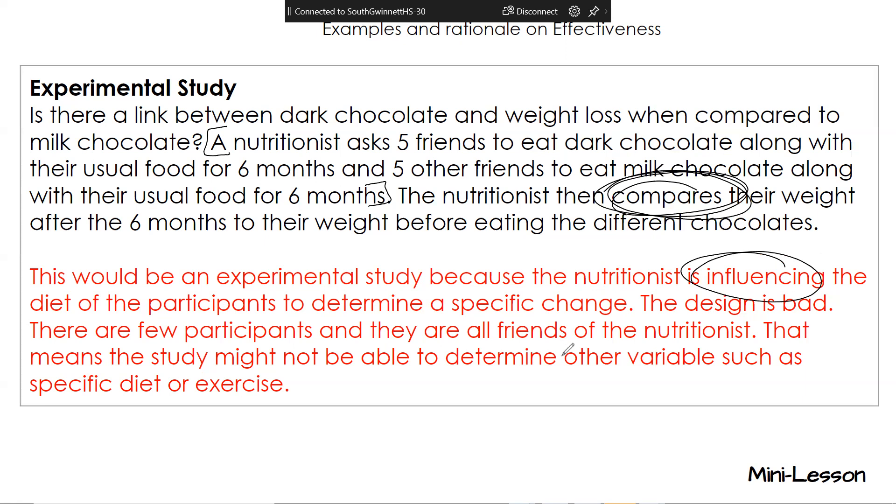Design is bad though because there are very few participants, but they're all friends. So that's an issue as well. Like do your friends eat just about the same? It would be biased. Which we're going to talk about bias a little bit later. That means that the study might not be able to determine other variables such as specific diet or exercise. So you can't generalize to the population because it is biased.